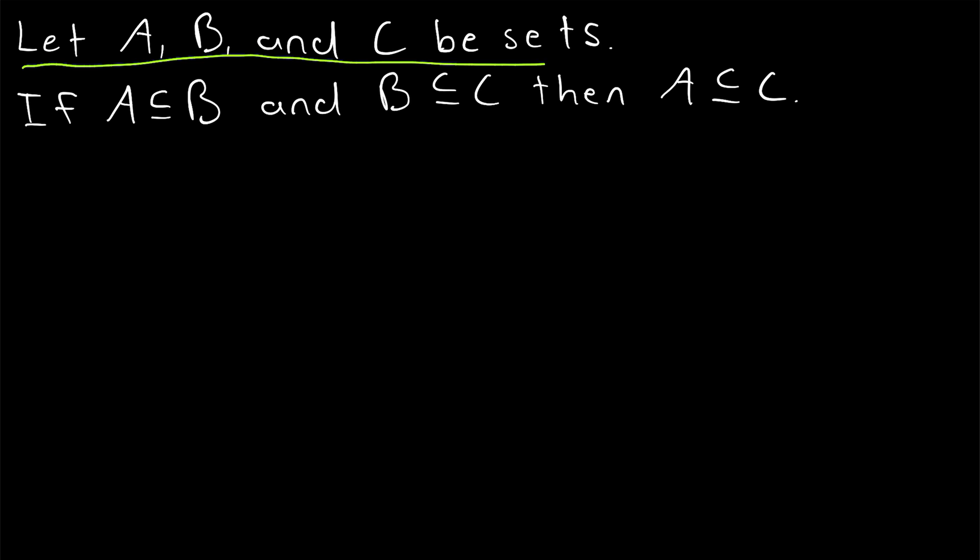Let A, B, and C be sets. If A is a subset of B and B is a subset of C, then A is a subset of C. This is the transitive property of subsets.